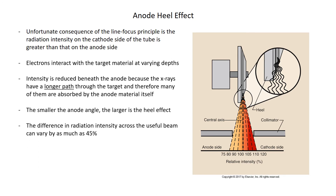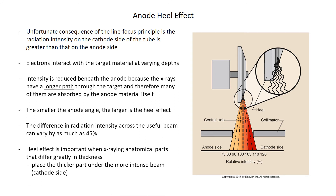The difference in radiation intensity across the useful beam can vary by as much as 45%. On the diagram, 100% would be where the central ray is, with the anode side decreasing rapidly and the cathode side increasing. The heel effect is important when x-raying anatomical parts that differ greatly in thickness. A classic example is the AP of the thoracic spine — the thicker thorax area goes under the cathode side, and the thinner cervicothoracic area goes under the anode side. Place the thicker part under the more intense beam on the cathode side.